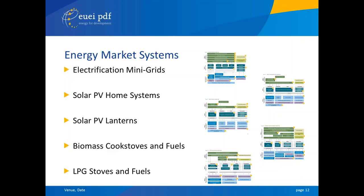We could have covered more market segments, but we chose to focus on these: mini-grids, solar home systems, solar PV lanterns — meaning smaller solar PV systems — biomass cookstoves and fuels, and energy. On the right side of the screen you can see that the market maps look quite different for each segment.